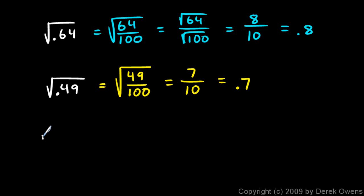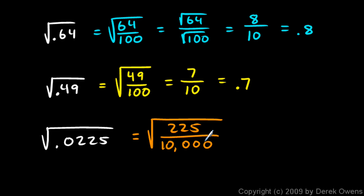Here's another. The square root of 0.0225. Hmm. Well, 0.0225 is 225 ten thousandths.